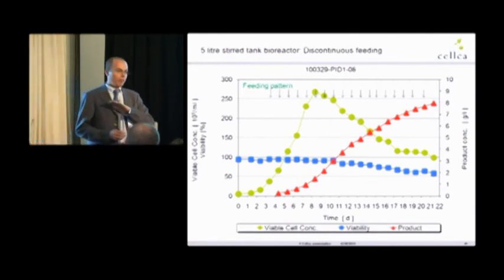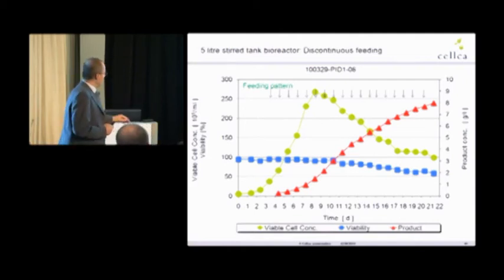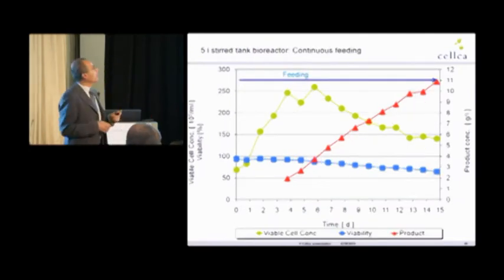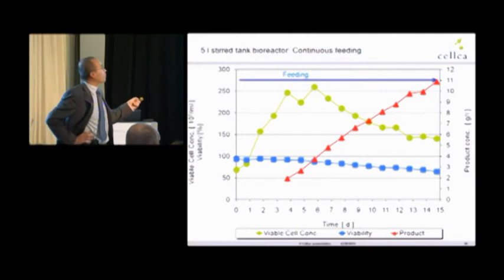There is no change on process conditions like temperature whatsoever. Now, that is one example for discontinuous feeding. And here, another example for continuous feeding.